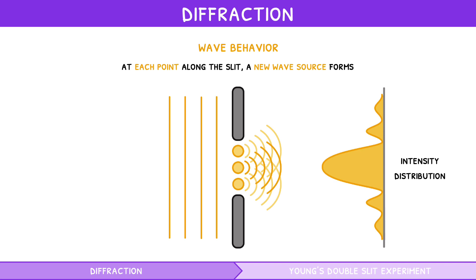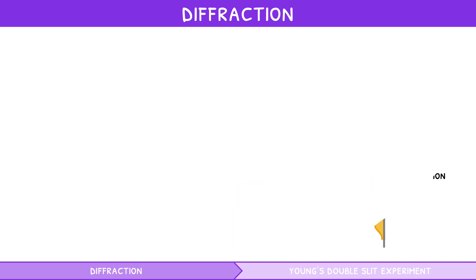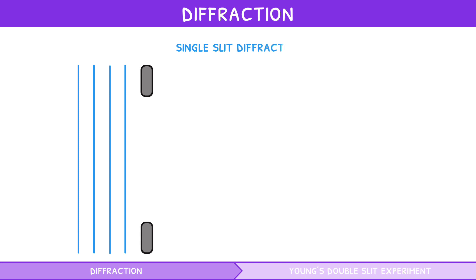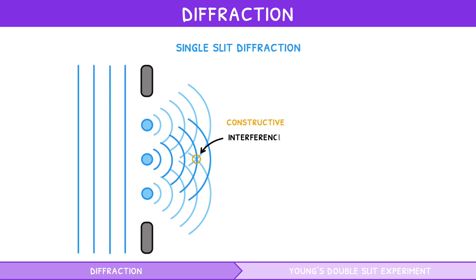You are expected to know the intensity distribution for diffraction through one slit, known as single-slit diffraction. Using three wave sources for simplicity, we see that many waves go down the center and constructively interfere at wave junctions.